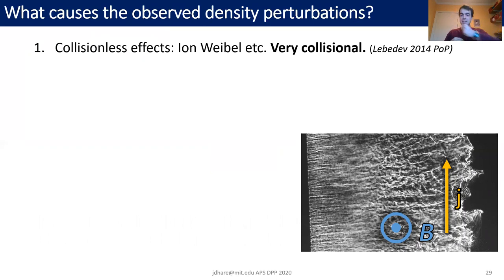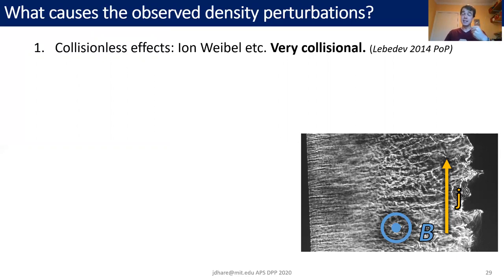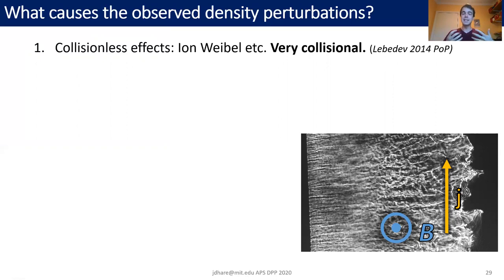What exactly is causing these observed density perturbations? When we first saw these elongated structures we thought of the ion Weibel instability, which forms filaments when you have counter-propagating streams of ions. However, this plasma is very collisional, making it very unlikely the ion Weibel could be active here. At very early times when the density is lower we might be in a collisionless regime with reflected ions that could cause the ion Weibel instability — this has been observed in aluminum plasmas in a 2014 paper by Sergei Lebedev. It's possible that at early times the ion Weibel sets up a structure which persists until later times when collisionality increases, but we don't have any evidence for that at the moment.